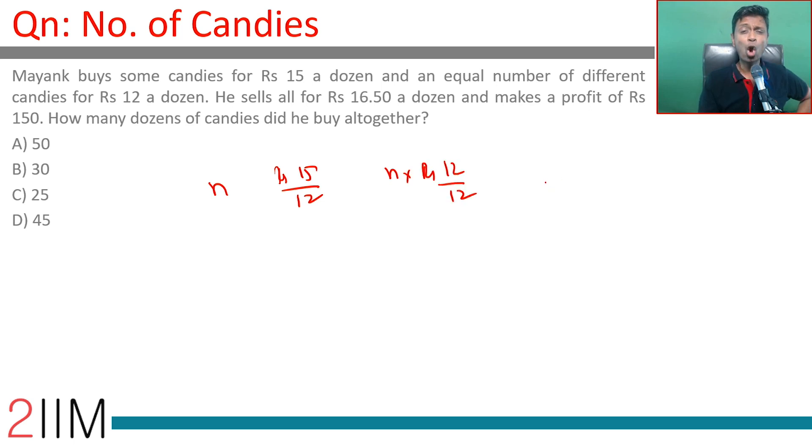He sells all of them, that is 2n of these, at Rs 16.5/12 each and makes a profit of Rs 150. How many dozens of candies does he buy?